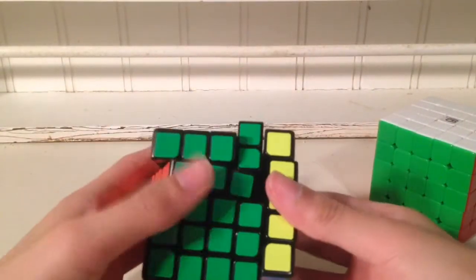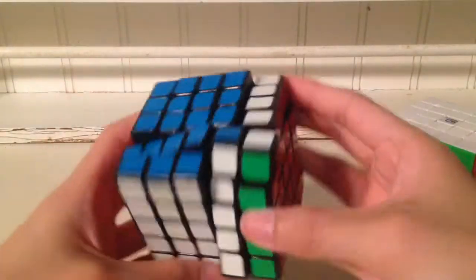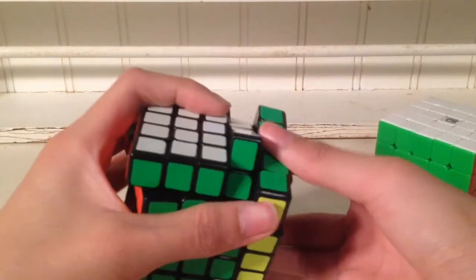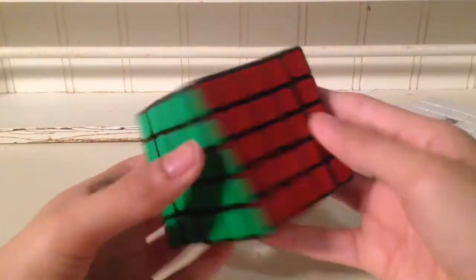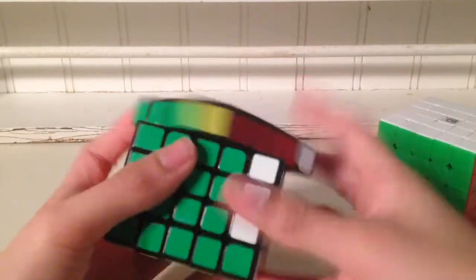The MF5 can get these really nasty lockups that can make or break a solve sometimes, and it takes quite a long time to get them back to cube shape. Another thing that happens is when you're turning fast and are inaccurate, this cube locks up a ton.